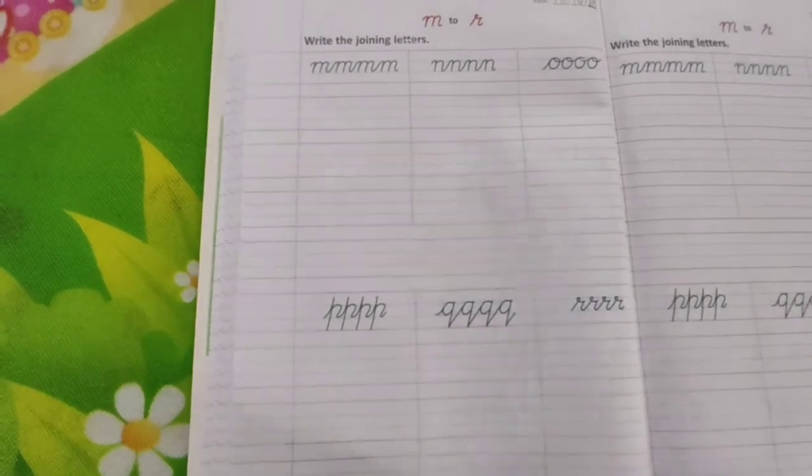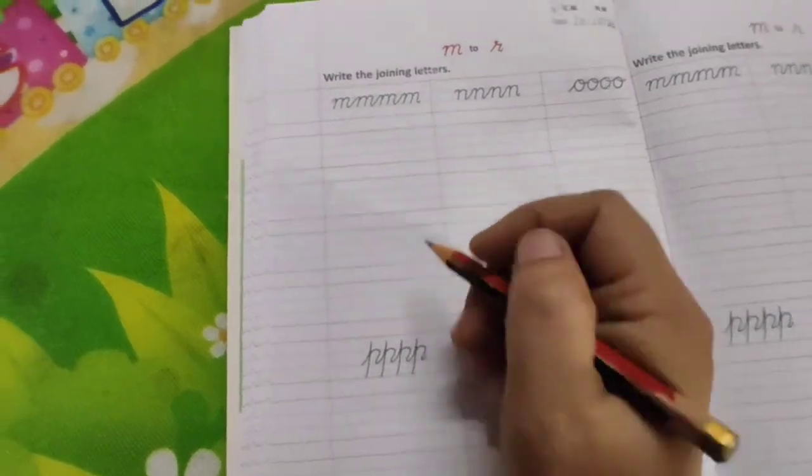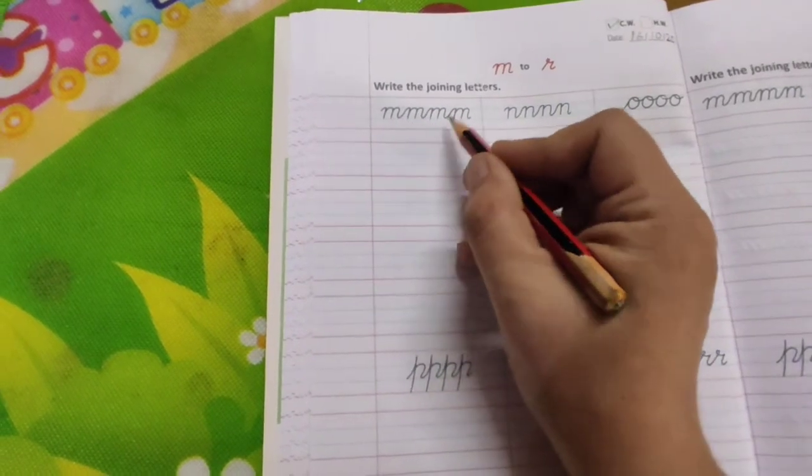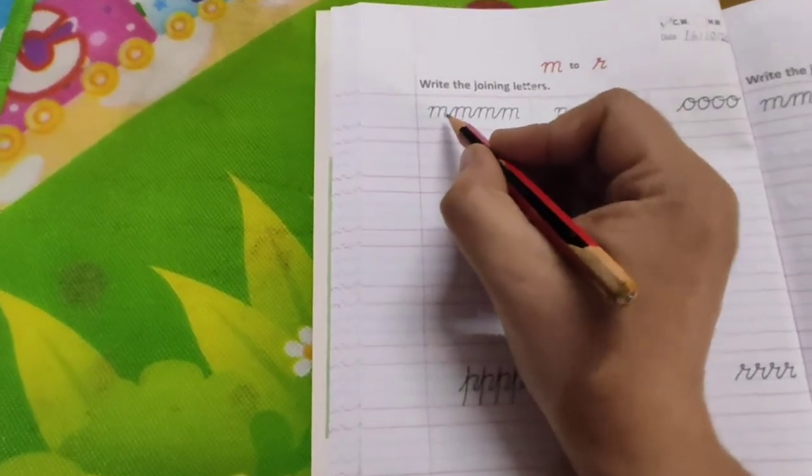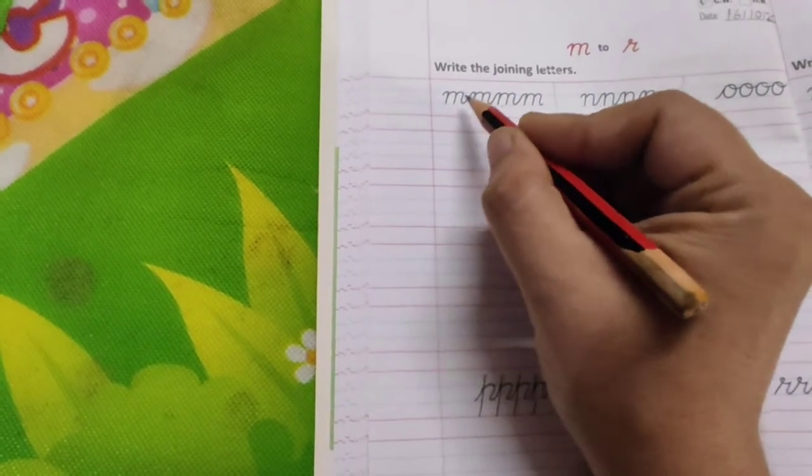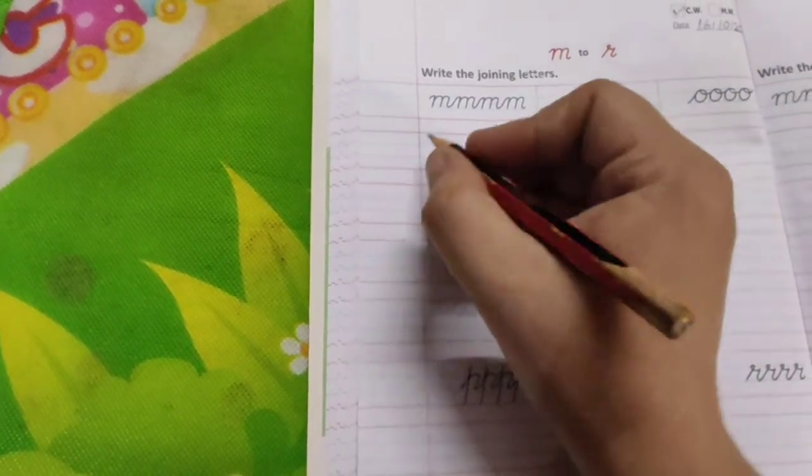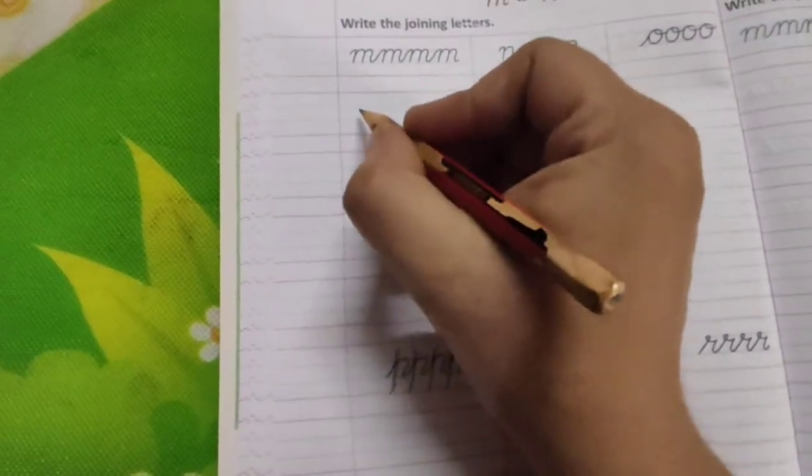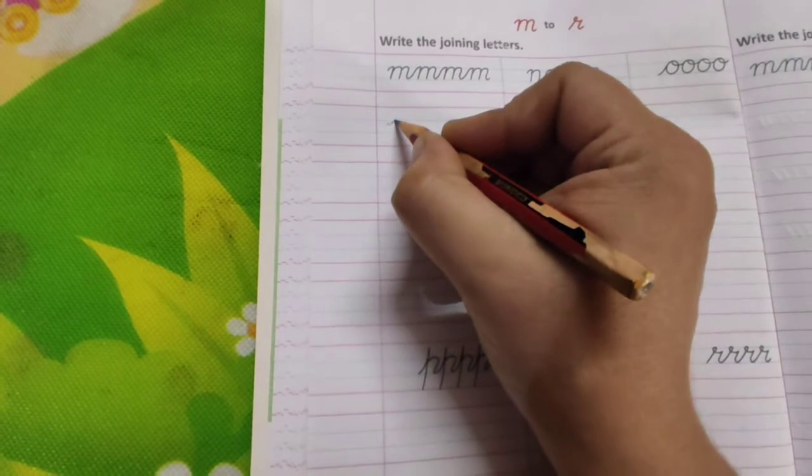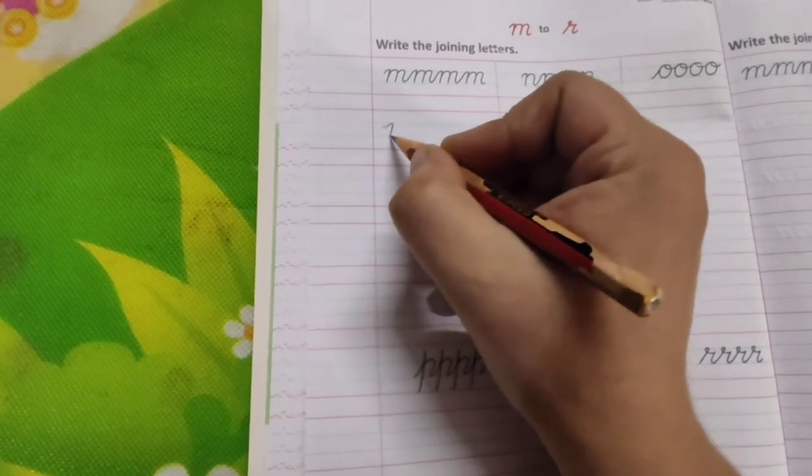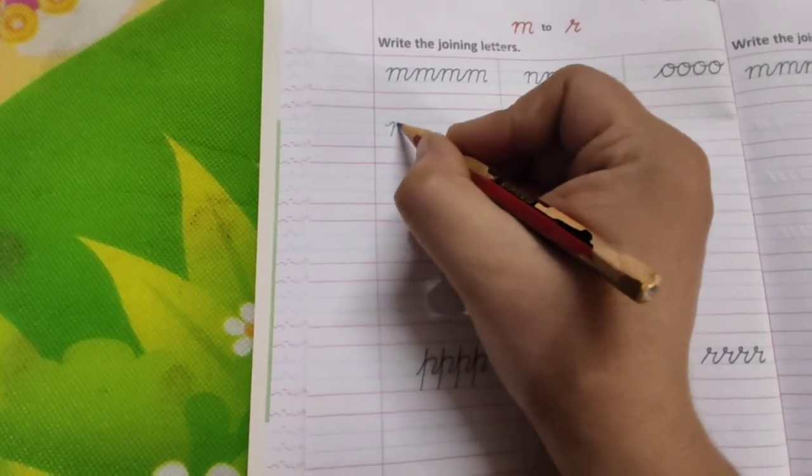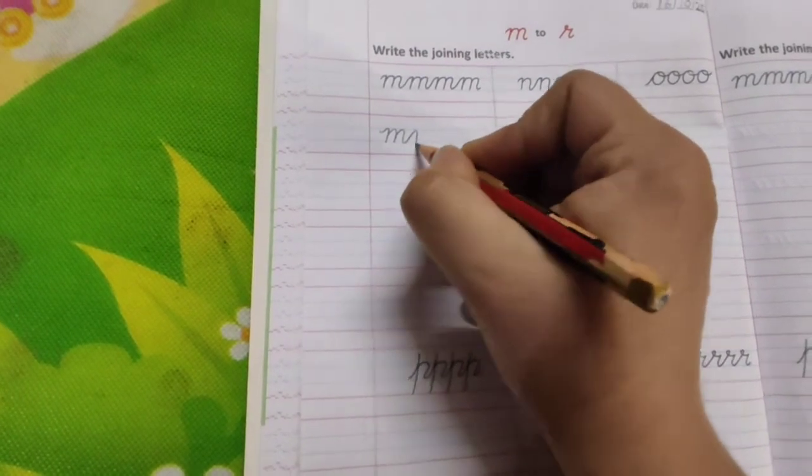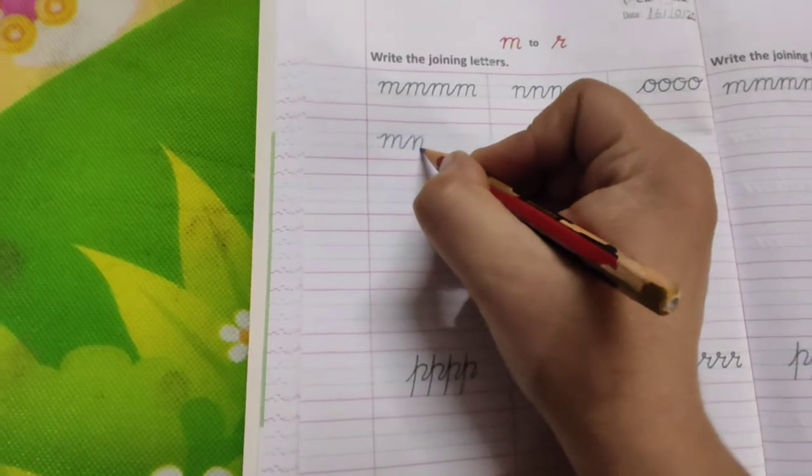so children you all are very much aware about the strokes. So here we will write the letters cursive small m by joining the letters together. You can see the first letter is small cursive m. So start from here, from the blue line. Yes, make a curve, come down towards the blue line. Now join, make a curve downward. Now join this again. Four times you have to write.